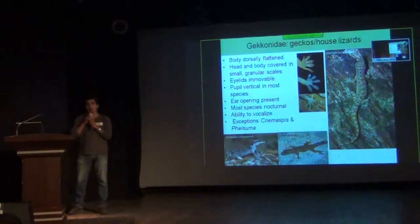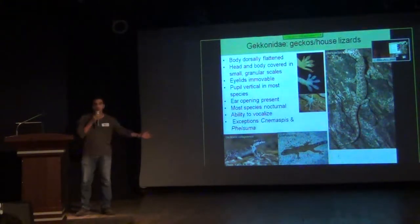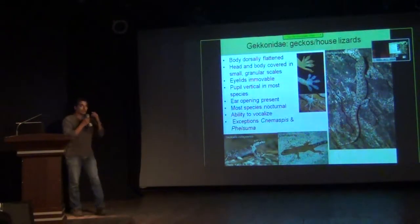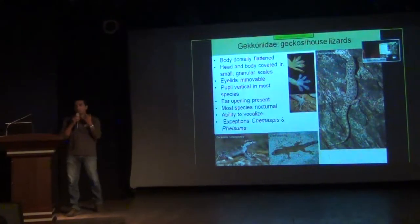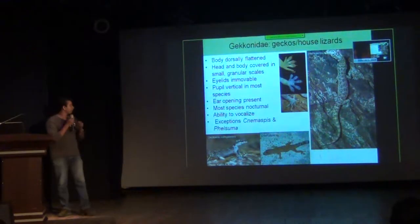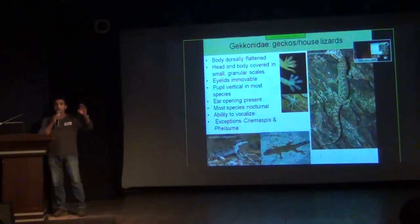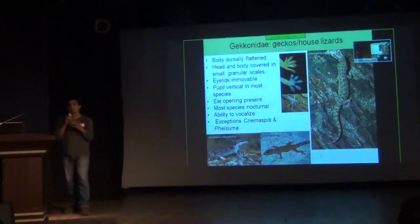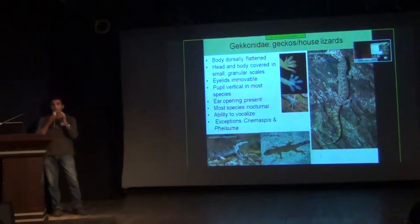Most species are nocturnal, though some groups have become diurnal — this character evolved independently in multiple groups. For example, Nematurus, the day geckos, are mostly diurnal or crepuscular and have a round pupil. Most other nocturnal species will have vertical pupils; some species even have horizontal pupils, though we don't have an example of that in India. Phelsuma andamanensis is a very interesting gecko found only in the Andaman Islands — all its relatives are in Madagascar and the Seychelles. It is also diurnal and has a round pupil. Geckos are unique among lizards in that most lizards do not vocalize, but geckos are the only group with the actual ability to vocalize and produce calls.